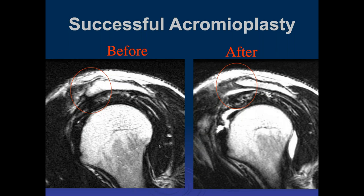There was a period when surgeons routinely removed the coracoacromial ligament, but it was found that this led to abnormal anterior instability. So as John noted, it's best to leave that structure intact when possible.